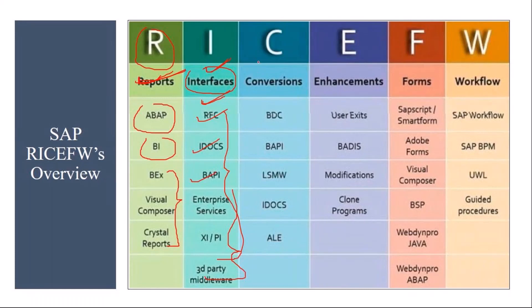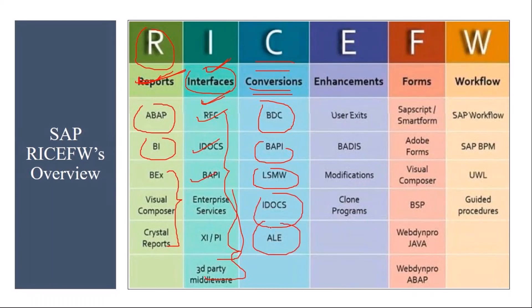C means Conversion. During implementation or rollout, you have to take master data and open transactional data from the legacy or third-party system and load it into SAP. The tools used are BDCs, BAPIs, LSMW, IDocs/ALE, and in S/4 HANA you have LTMC. This is basically called data upload or data migration.